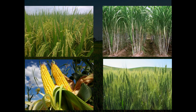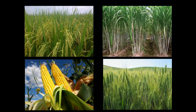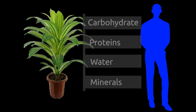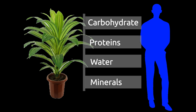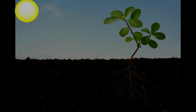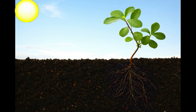Let's see how plants grow and what materials they require. Similar to humans, plants also require carbohydrate, protein, water, and minerals for growth and energy. Plants fulfill their need of carbohydrates by preparing food using sunlight.